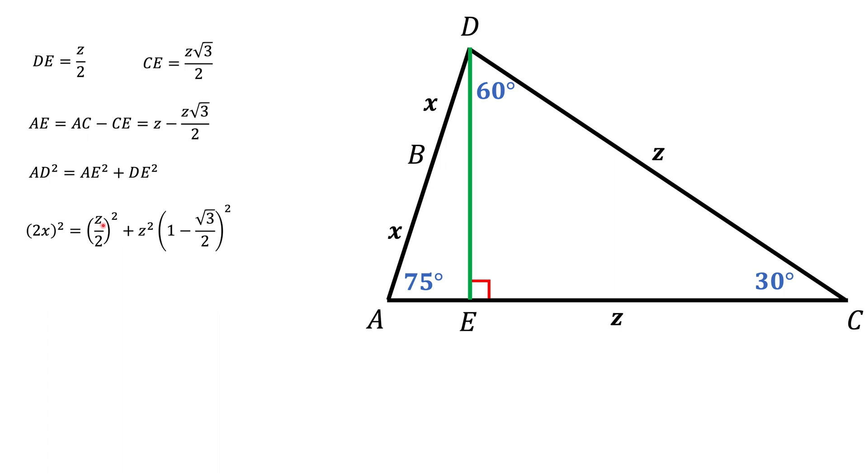And what we're really interested here is not x and z by themselves, but actually the ratio of x over z. So we can easily get it from here. We can find x over z squared by opening the parenthesis here and rearranging the terms. And from that, we can find x over z by taking square root of the expression above. That's what we're going to get.